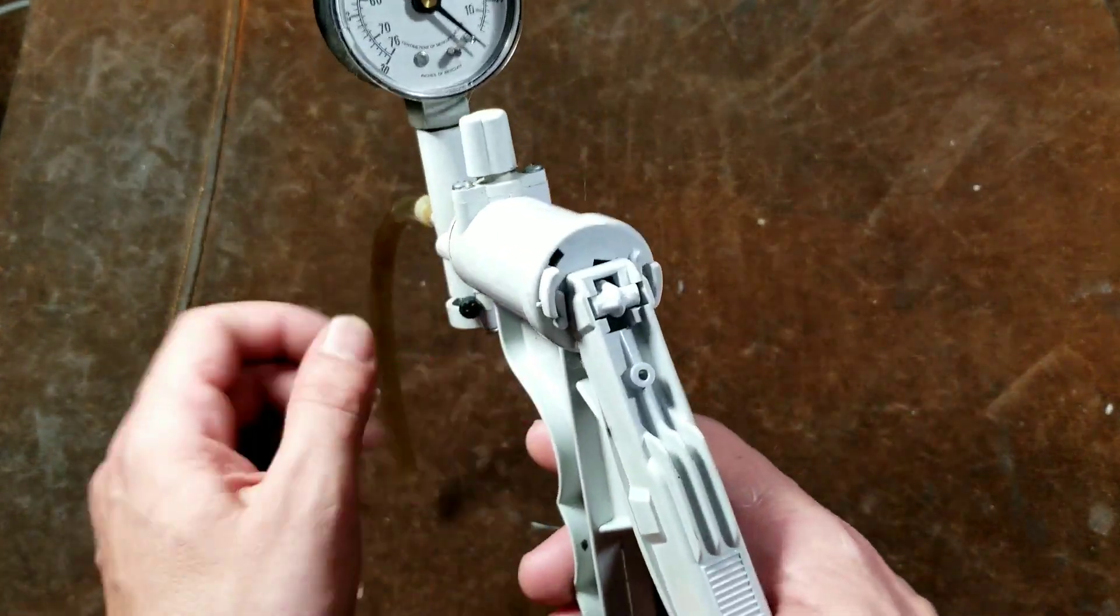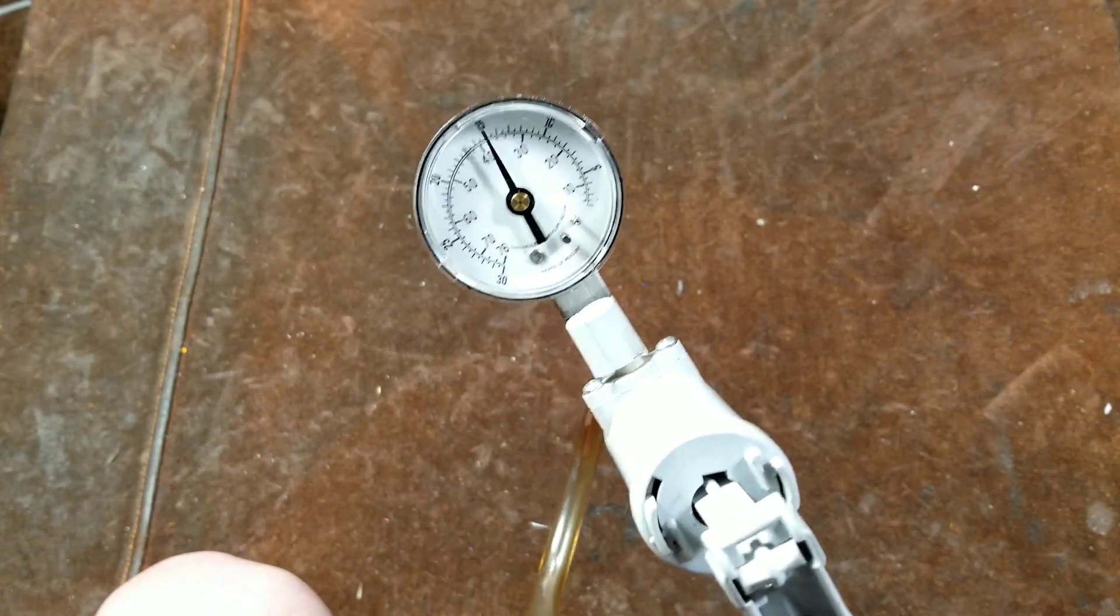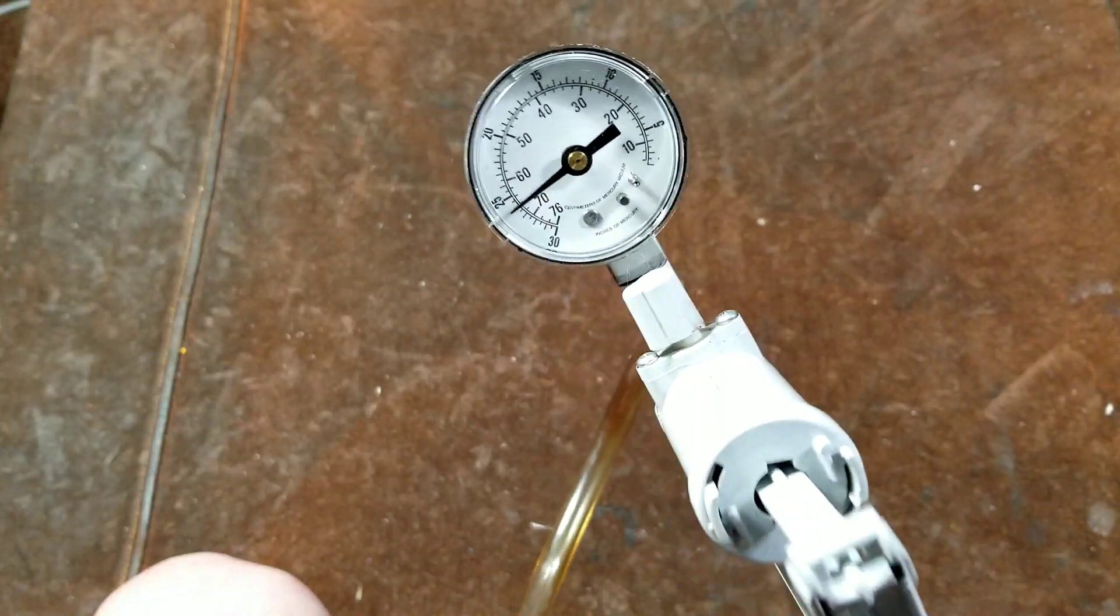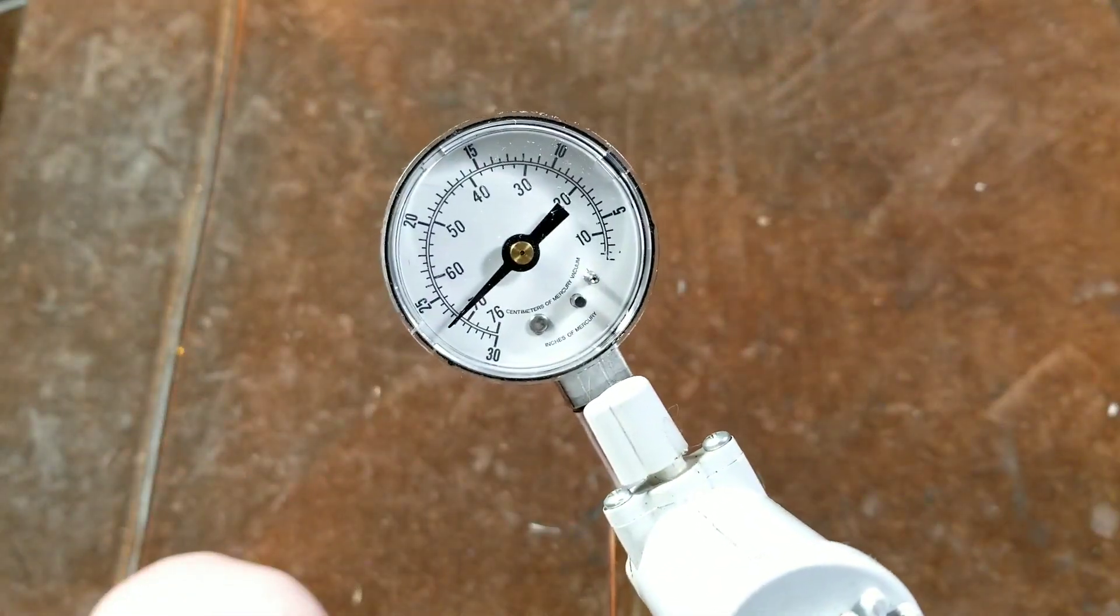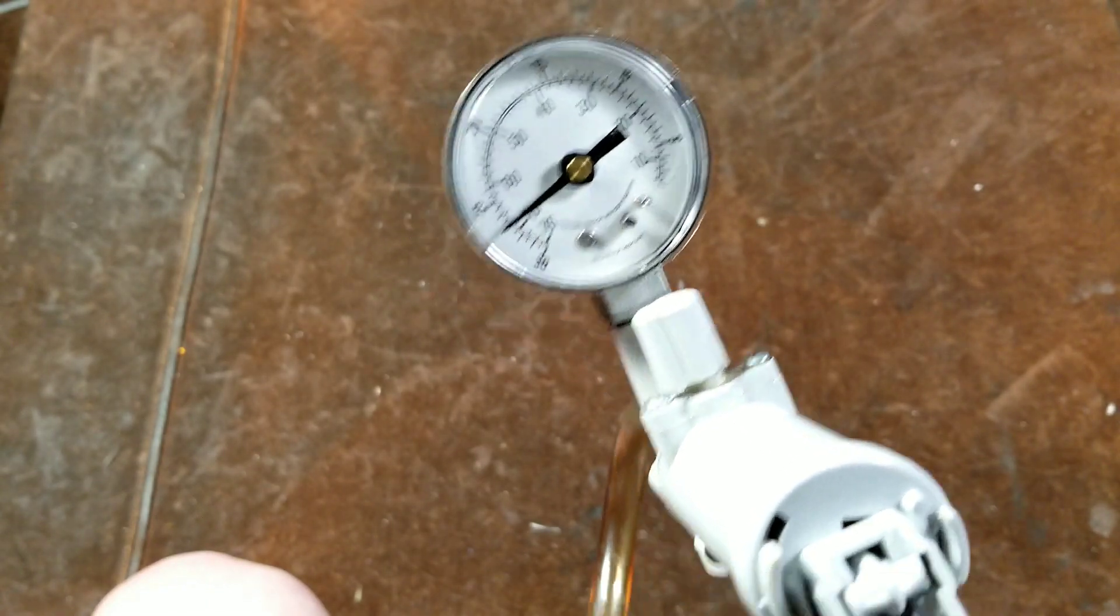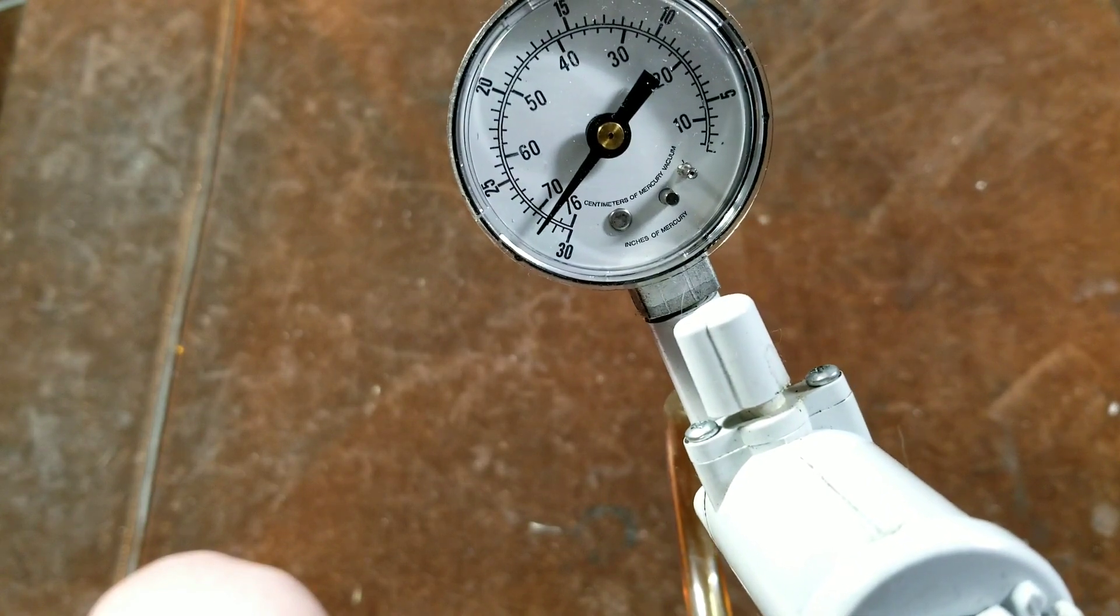Another thing to note about hand vacuum pumps and diaphragm style, for that matter, is these will only achieve so much vacuum. If we pump this all the way up, we can see we get about 30 inches of vacuum. If we continue to pump it, you can get just a little bit more.